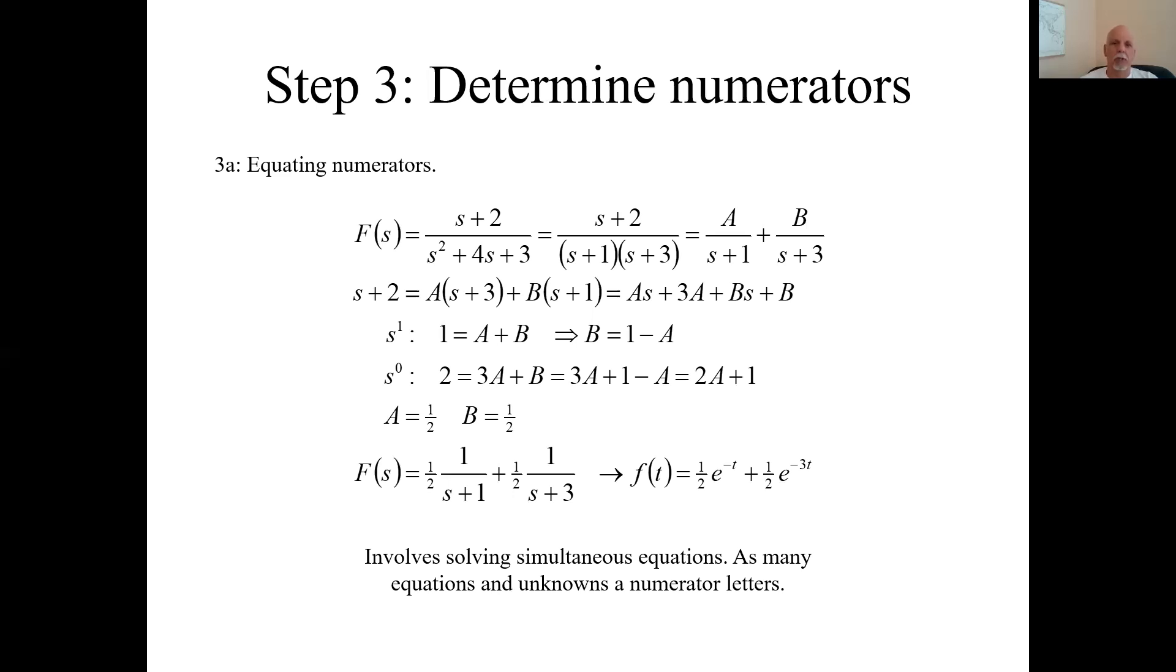How to step three, determine those numerators. The one way, kind of the brute force of the old reliable way, is called equating numerators. Say this was what was given to us. You did step one and we factored it. Then we did step two and broke it up into a sum. Now look at this guy and this guy. If you were to put these guys over a common denominator, you would multiply A times this s plus three and then plus B times s plus one. That would be the numerator on the right side. There it is. On the left side, the numerator was s plus two. This numerator has to equal this numerator, or the numerator you get when you cross multiply to get it over a common denominator. We don't really care about the denominator. We want to equate numerators.